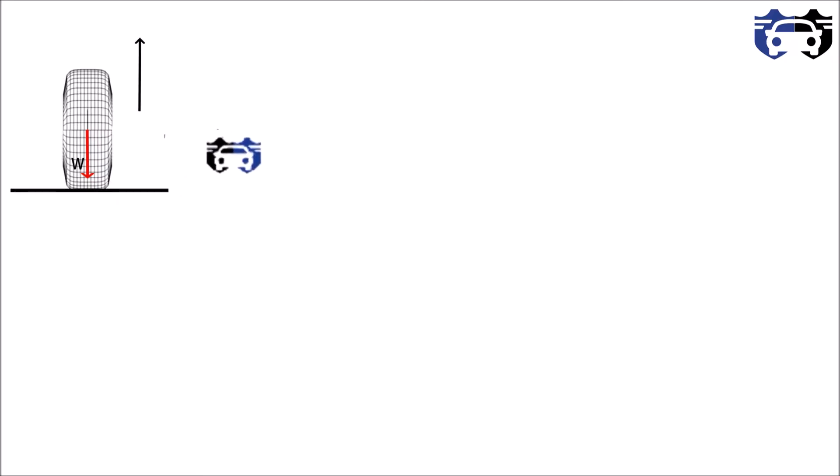Now this is a tire carrying the load W and it is moving straight. Now when you take a right turn, the tire will experience a centrifugal or inertial force in left direction at the center of gravity shown by Fc. Due to this force Fc, the tire will have the tendency to skid towards left direction.